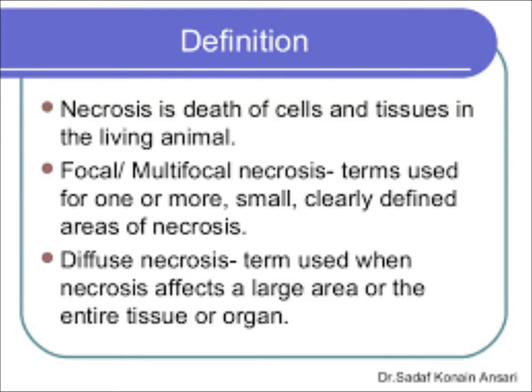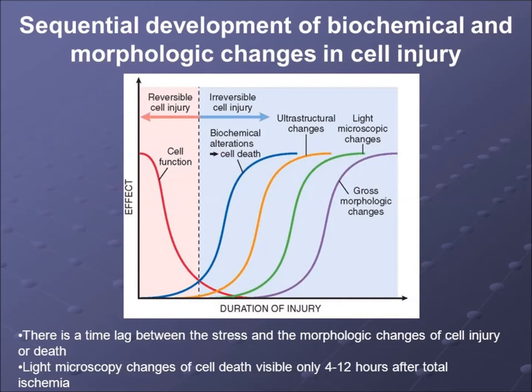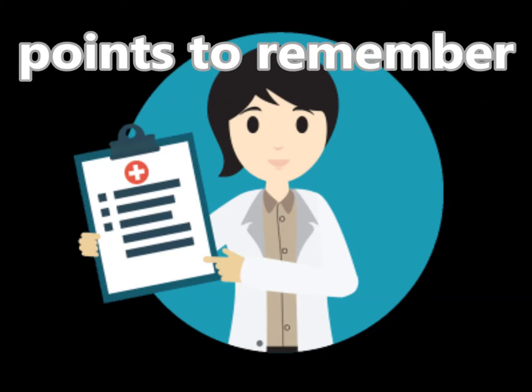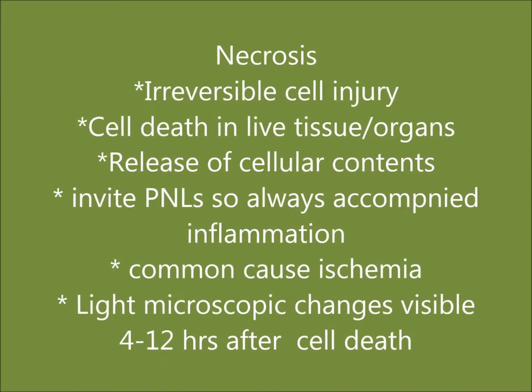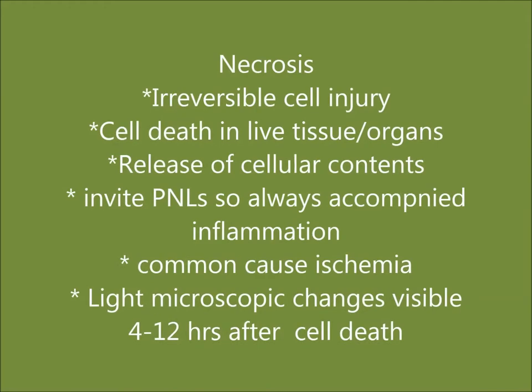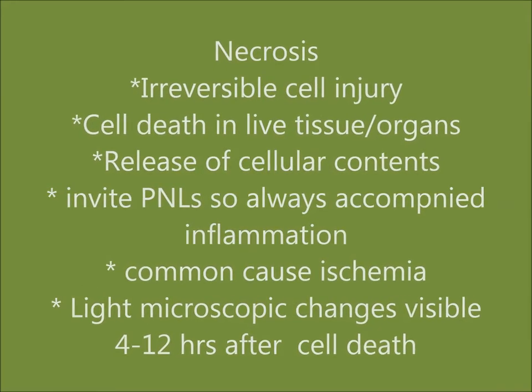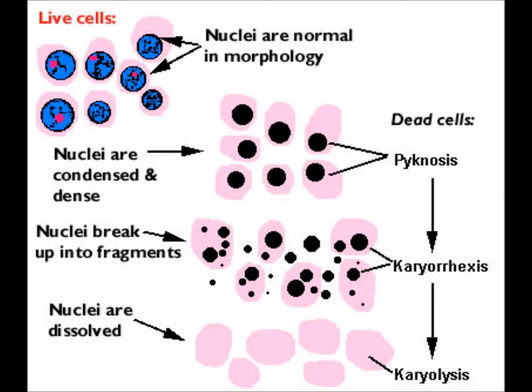Four to twelve hours are required for total loss of blood supply before microscopic changes become visible. Key points to remember: necrosis is a type of cell death due to irreversible cellular injury occurring in living tissue or organism. Release of cellular contents invites polymorphonuclear leukocytes. It is always a pathological process. The common cause is ischemia.